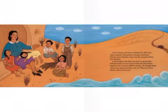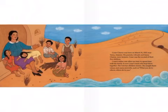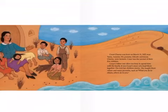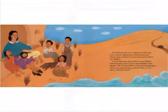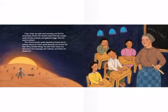Cesar Chavez was born on March 31, 1927, near Yuma, Arizona. His parents, Labrado and Juana Chavez, were farmers. Cesar was the second of their five children. Cesar's father was often too busy to spend time with the family. It was Cesar's mom who kept them together — she told her children stories and taught them values in many proverbs, such as, 'What you do to others, others do to you.' A proverb is kind of like a fable — a lesson. Cesar woke up early each morning and did farm chores. He carried water from the nearby canal, fed the animals, and gathered eggs. Then he went to school. The Chavez family spoke Spanish at home, but in school, whenever Cesar spoke Spanish, his teacher hit him. He later said, 'It's a terrible thing when you have your own language and customs, and those are shattered.'